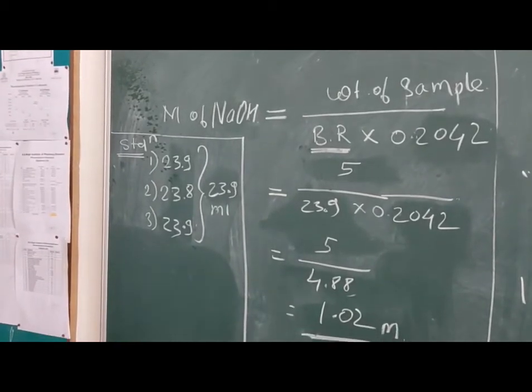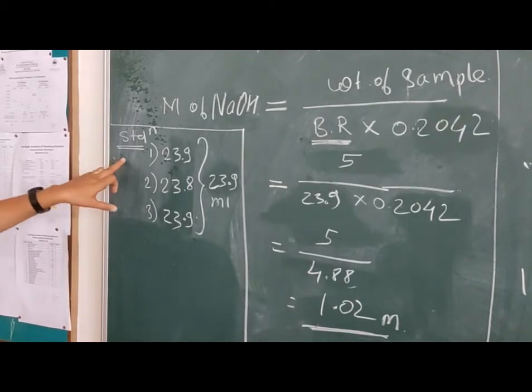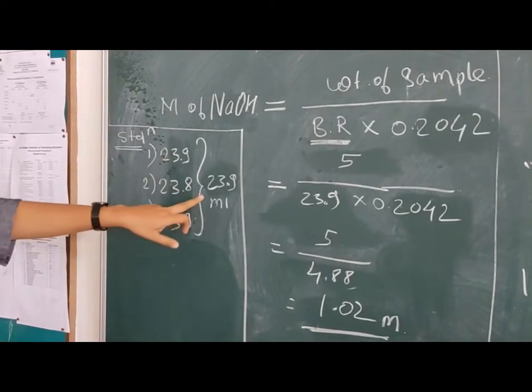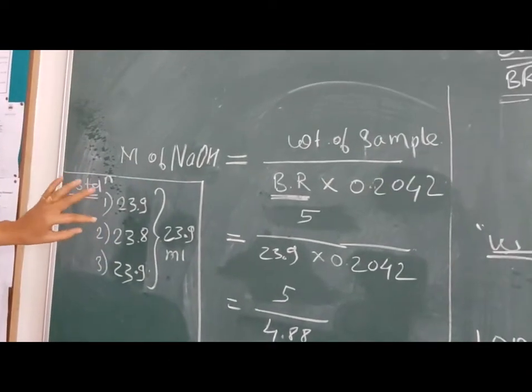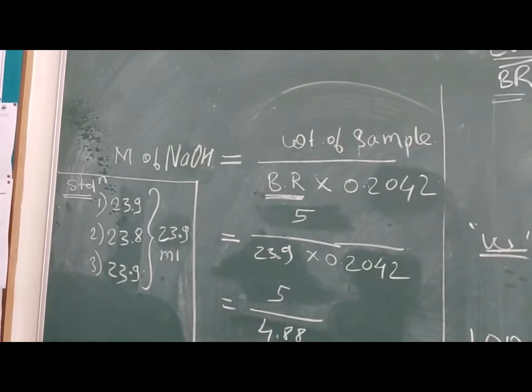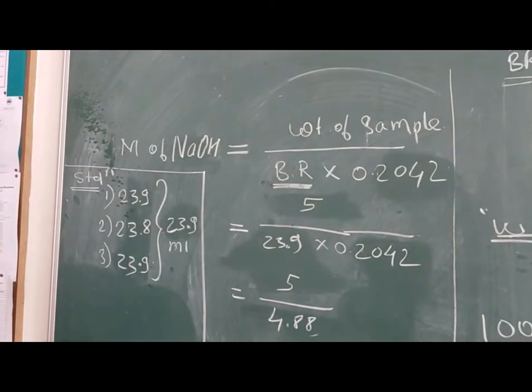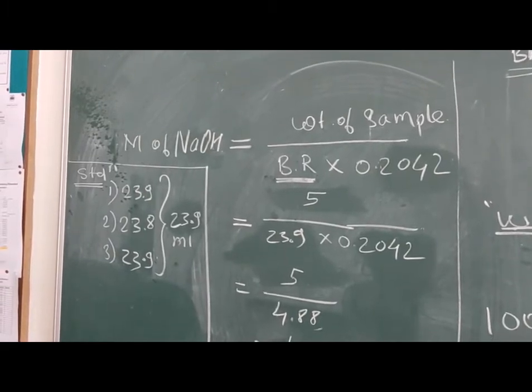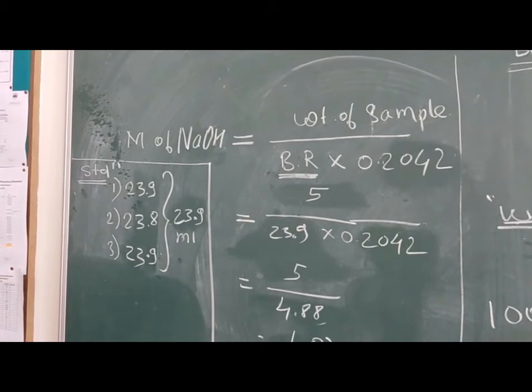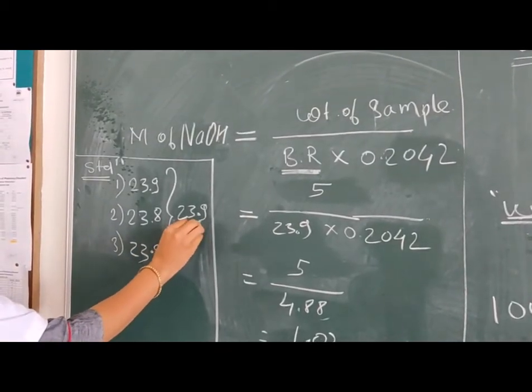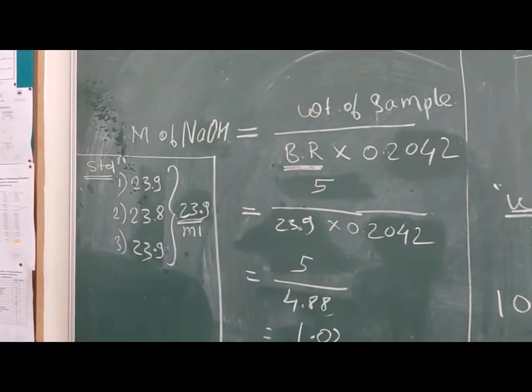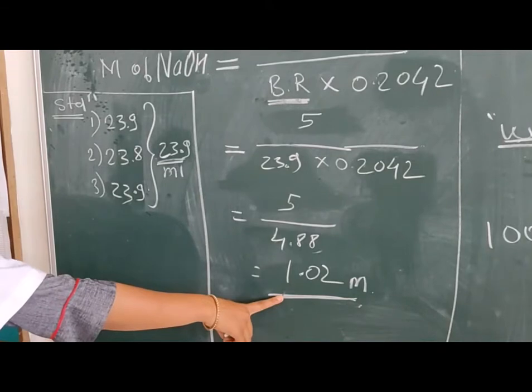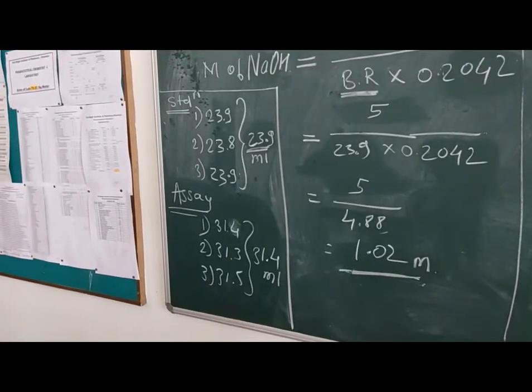Now let us move towards the calculation part. For standardization, the readings are 23.9, 23.8, 23.9 and the mean is 23.9 ml. Let's calculate the molarity of sodium hydroxide. Molarity of sodium hydroxide equals weight of sample divided by burette reading times 0.2042. This is the factor. Put the value in the formula: weight of sample 5 divided by the mean standardization reading 23.9 times 0.2042. Our calculated molarity is 1.02 molar.